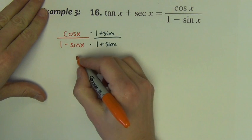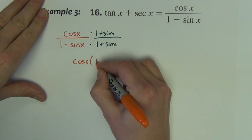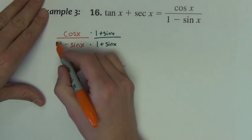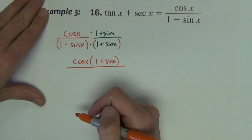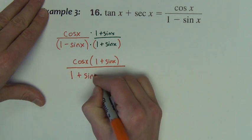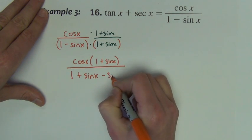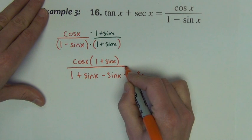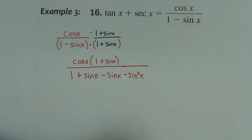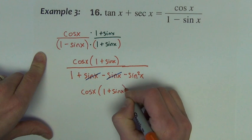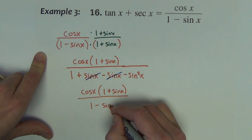Now in the numerator, when I multiply these together, for the time being, I'm going to leave it just like that. In the denominator, I'm going to FOIL 1 minus sine times 1 plus sine. So it is 1 times 1 making 1, 1 times sine makes sine, negative sine times 1 makes negative sine, and negative sine times positive sine makes negative sine squared. We've got an opportunity to reduce here to cancel out in the denominator.